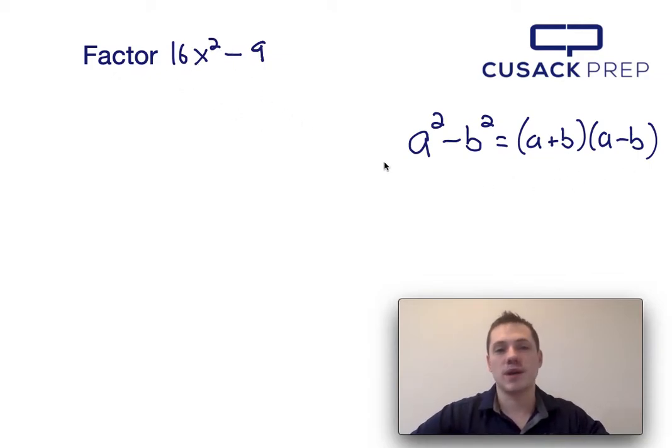Now comparing 16x squared minus 9 to a squared minus b squared, I can see that 16x squared is the same as a squared, and b squared and 9 are in the same position.